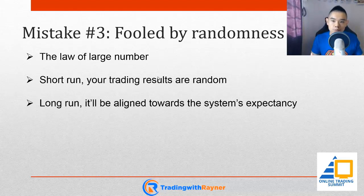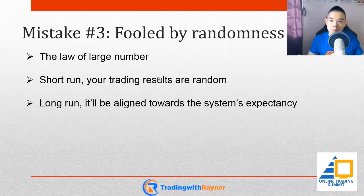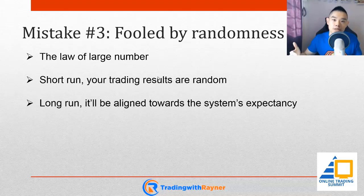You intuitively know that if you toss the coin many times — 100 times, 500 times, 1,000 times — it's likely to have 50% heads and 50% tails. But in the short term, when you toss the coin just six times, it's not likely to have three heads and three tails. And this is what we mean by the law of large numbers: in the short run, an individual result is actually random, and it's only in the long run, with a large sample size, that results align towards the system's expectancy — just like the coin toss.